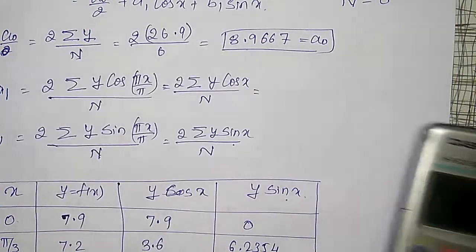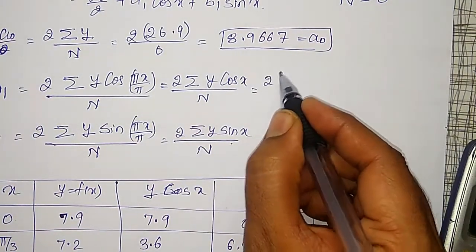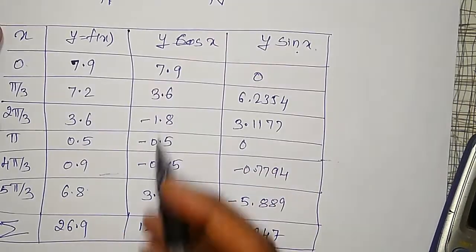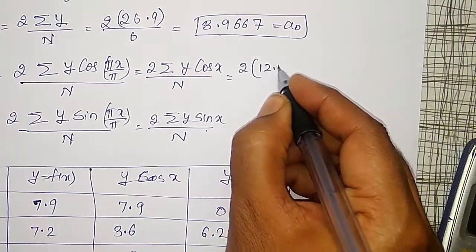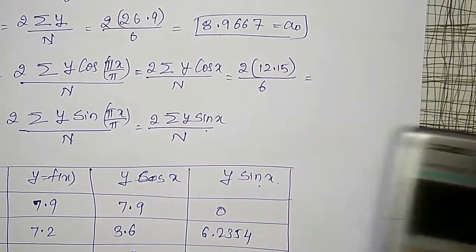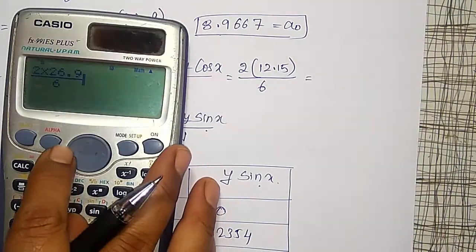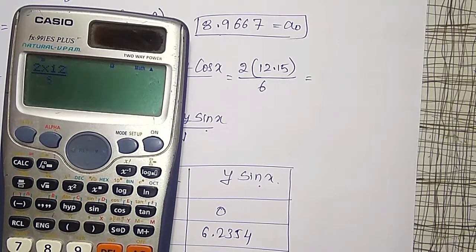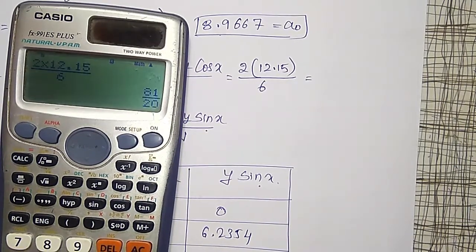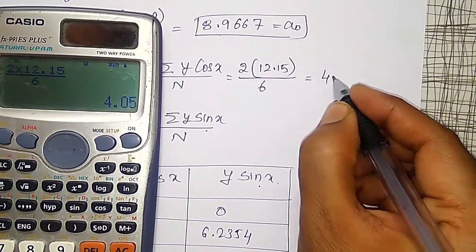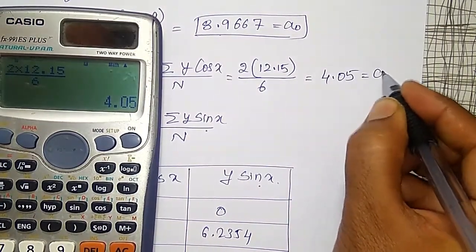Similarly, to calculate a1, 2 into summation of y cos x, y cos x summation is 12.15, 12.15 divided by N is 6. That also I will calculate, 2 times 12.15, and it comes out to be 4.05. 4.05 is my a1.